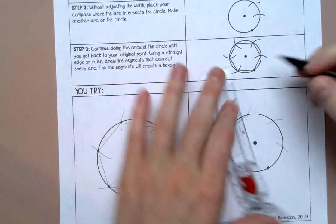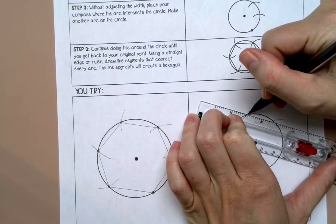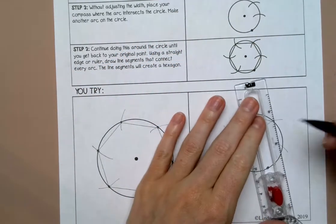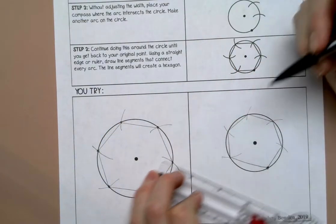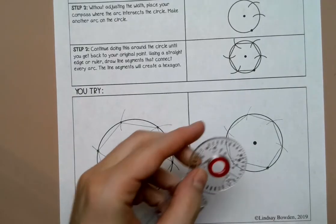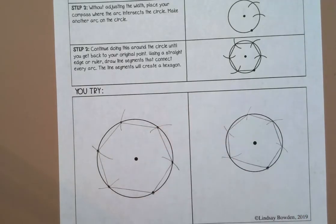And when you're drawing these hexagons, they're actually creating regular hexagons. So they have all equal sides. Now, mine was a little bit off just because of this compass, but it's still a hexagon. See you in a minute.